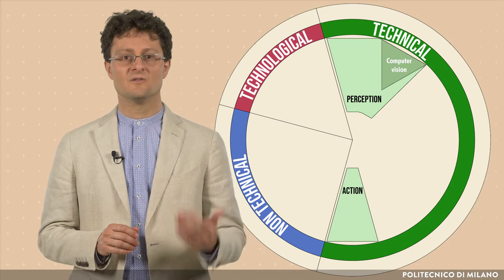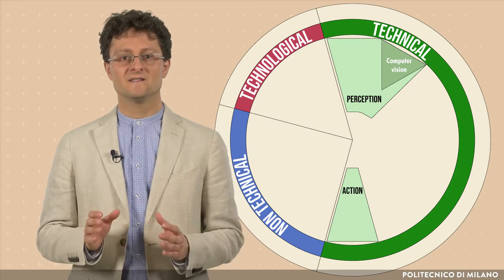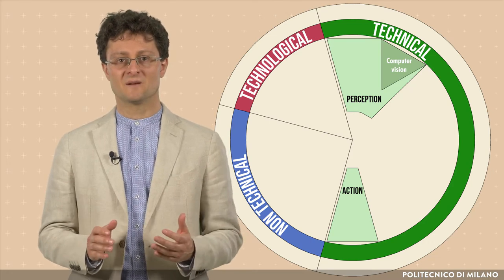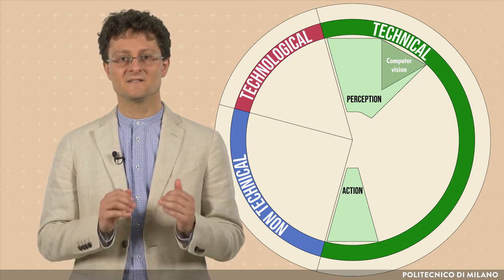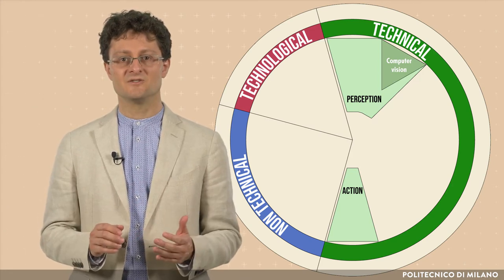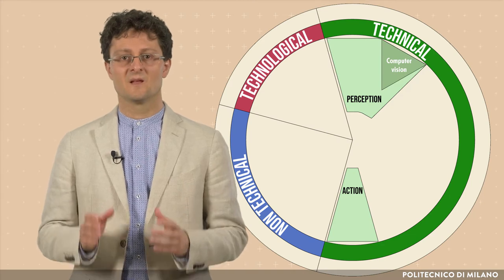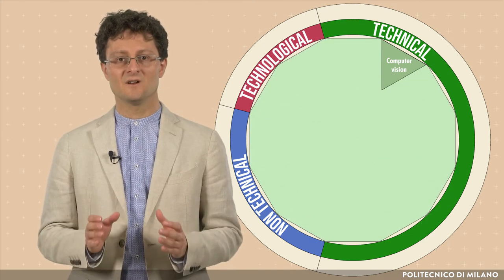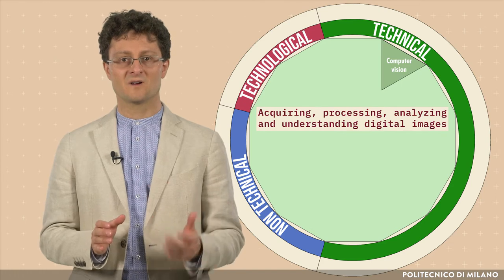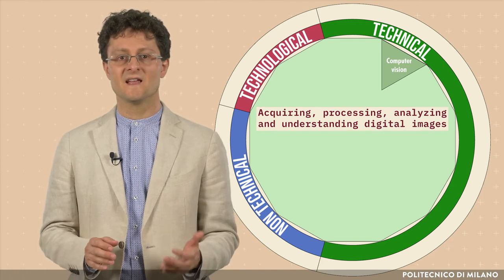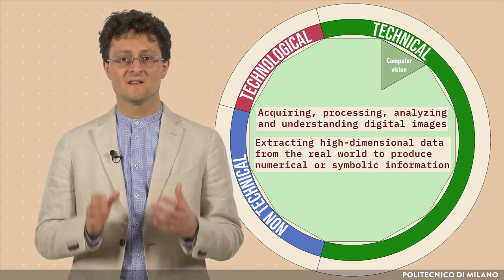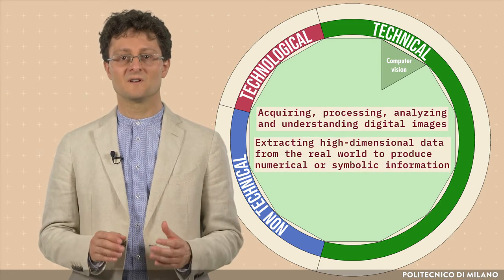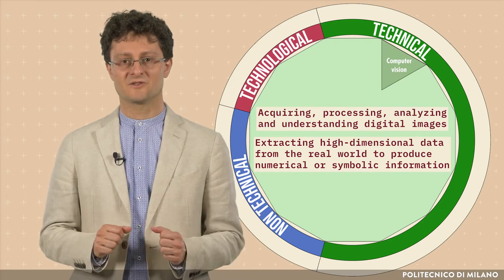Computer vision, known as CV, is an interdisciplinary AI subfield studying how machines can get high-level understanding from digital images or videos. Possible tasks include methods for acquiring, processing, analyzing and understanding digital images, and extracting high-dimensional data from the real world to produce numerical or symbolic information.